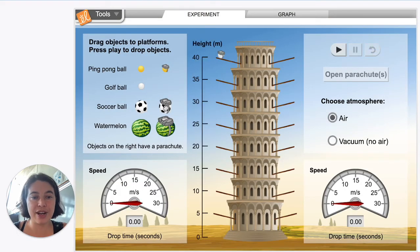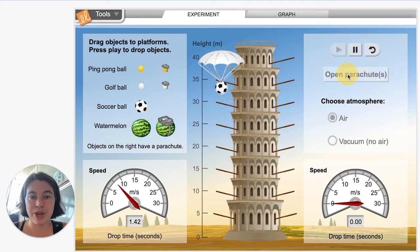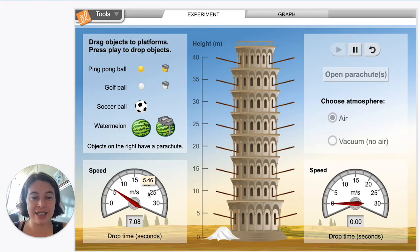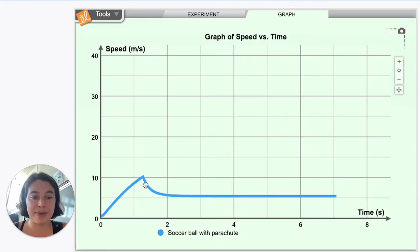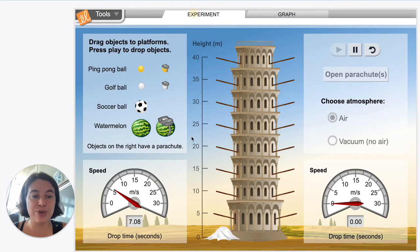Let's look at the soccer ball. The soccer ball with the parachute. We open it up. It slows down significantly and ends up at 5.46 meters per second as the new terminal velocity.